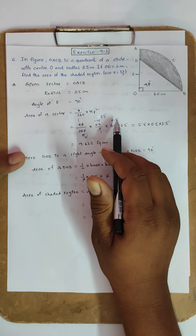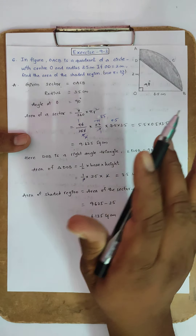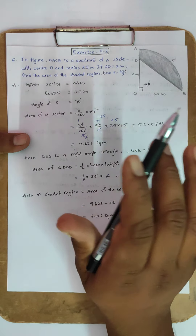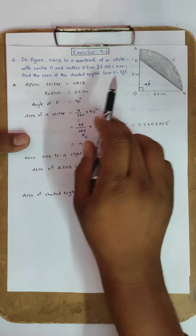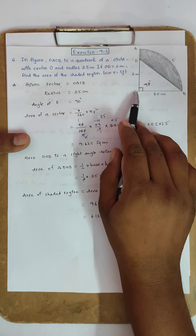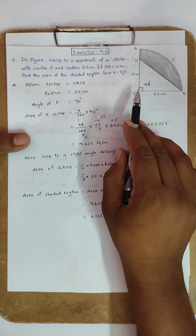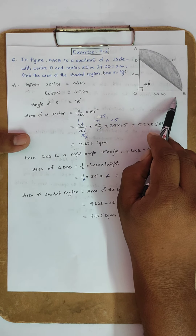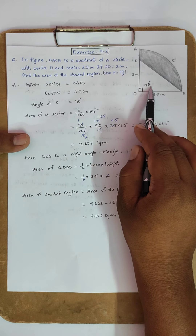A quadrant means a part of a circle divided into 4 equal parts — one of those parts is called a quadrant, which is half of a half. Now, given that sector OACB is a sector doing 90 degrees at center O, with radius 3.5 cm and angle at center O equal to 90 degrees.